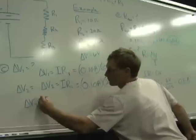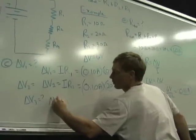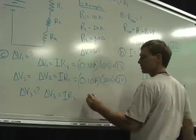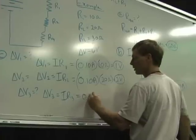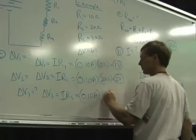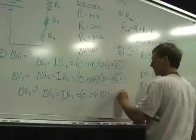And the third one, delta V3, the third voltage is current times the resistance of the third, which is 0.10 amps, times 30 ohms, which is going to give me 3 volts.